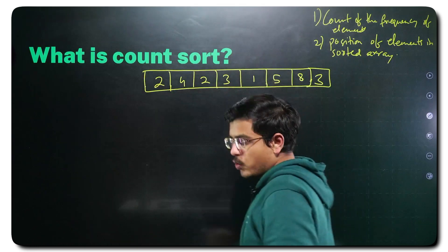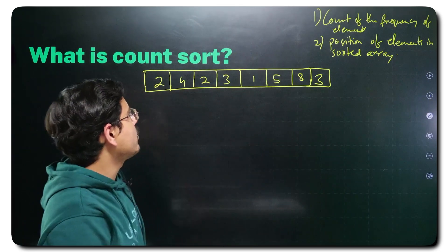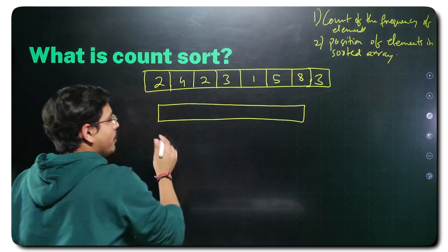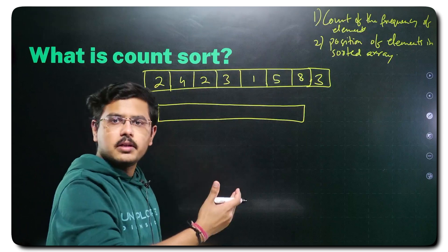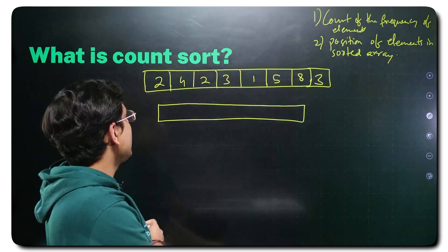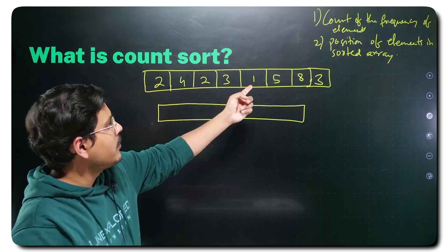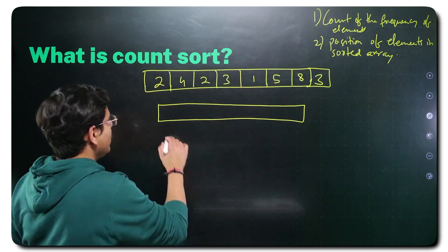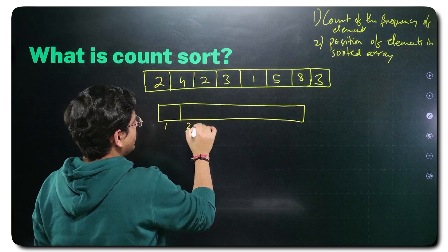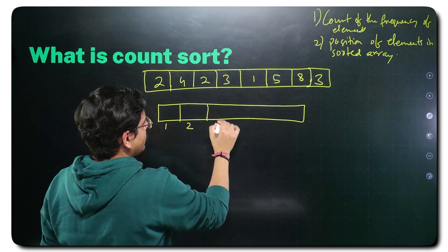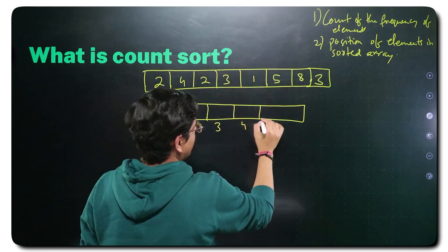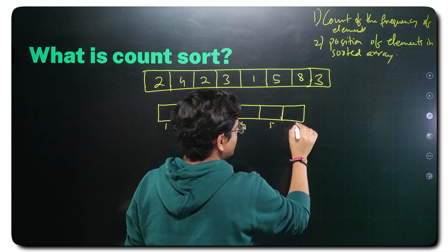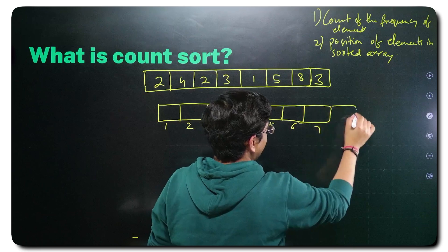First, what I will do is create a frequency array — an array which will store the frequency of these elements. From the minimum element to the maximum element, that would be my range for this array. If you carefully see, the minimum element is 1 and the maximum element is 8. So I will start from 1, 2, 3, 4, then 5, then 6, then 7 and then 8.